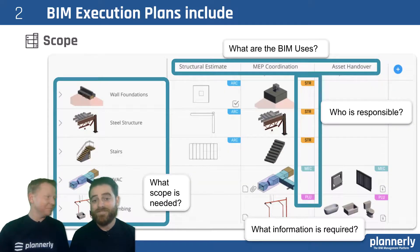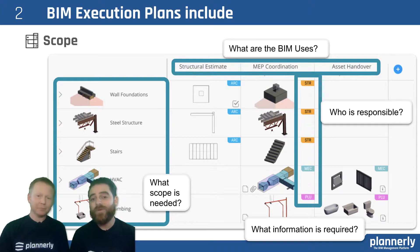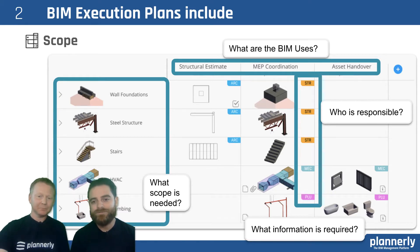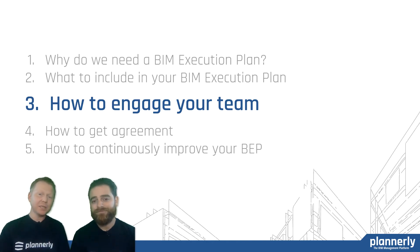Probably the most important part of a BIM execution plan — definitely the most important part — is the scope. You want to align what scope is required, who's responsible, how much information, and again, why are we doing BIM? What are those BIM uses? So aligning a really clear scope plan can help everyone. That's talking about why we need an execution plan and what is included. But how do you get your team engaged?